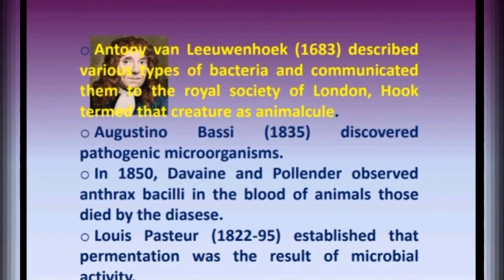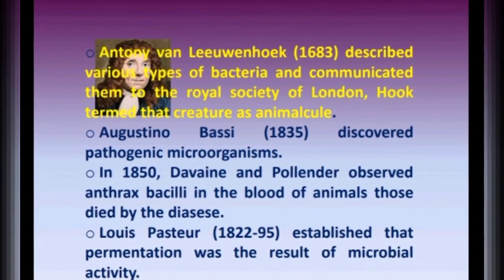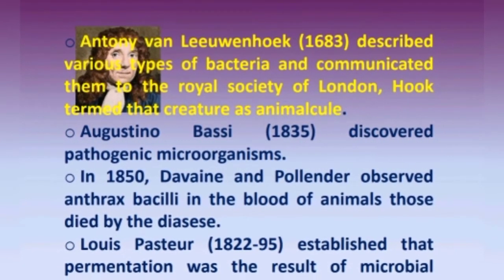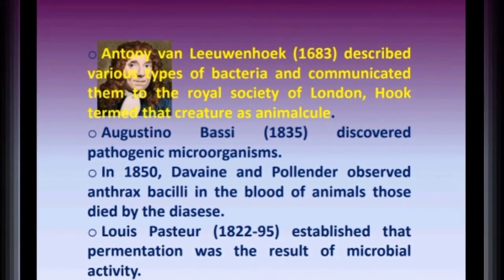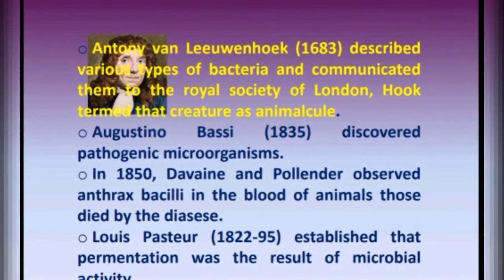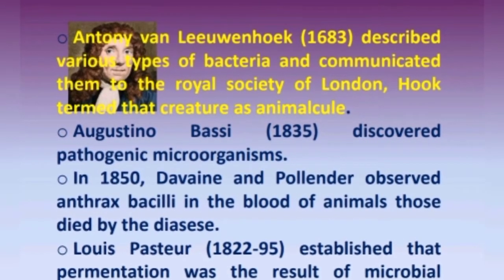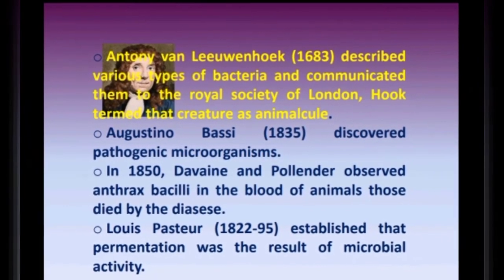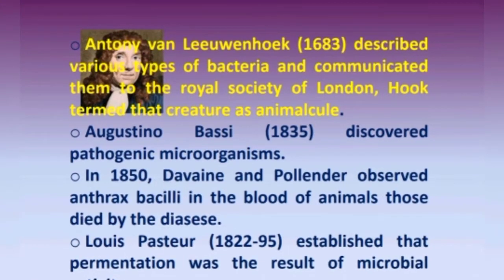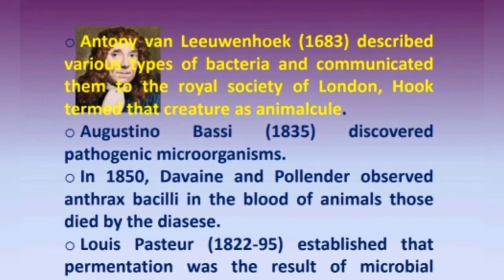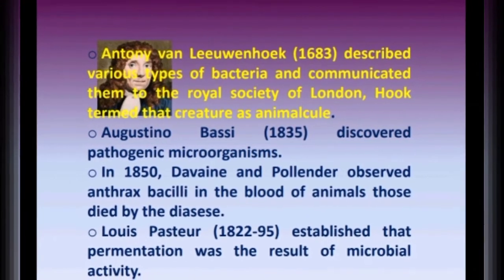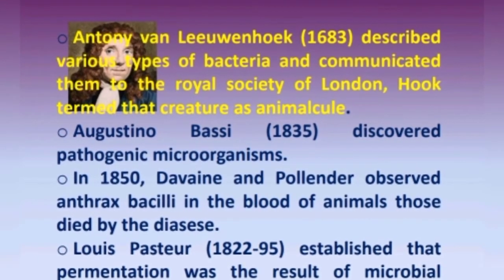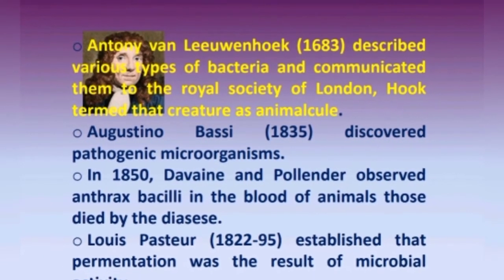In 1683, Antony Van Leeuwenhoek described various types of bacteria and communicated them to the Royal Society of London. Hooke termed these creatures as animalcules. In 1835, Agostino Bassi discovered pathogenic microorganisms. In 1850, Davaine and Pollender observed anthrax bacilli in the blood of animals that died from the disease. Louis Pasteur established that fermentation was the result of microbial activity.